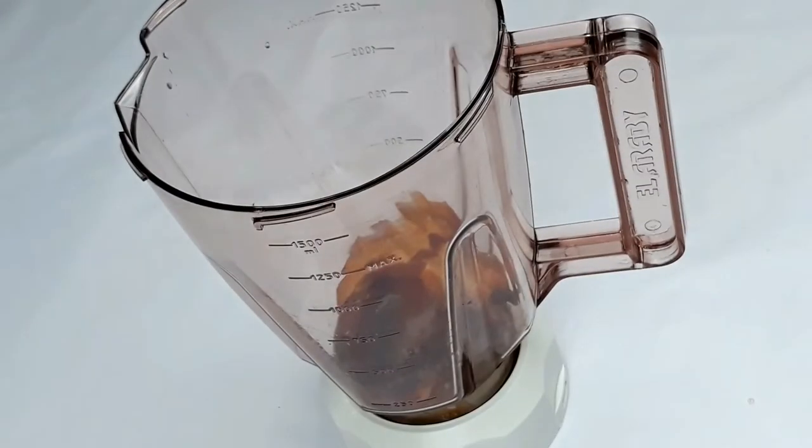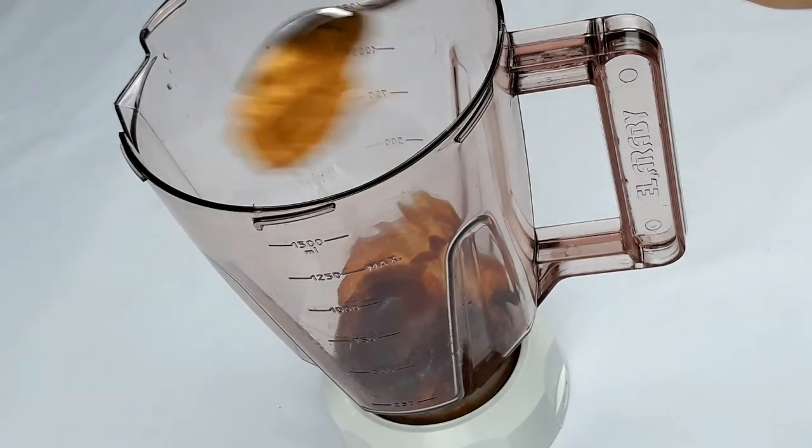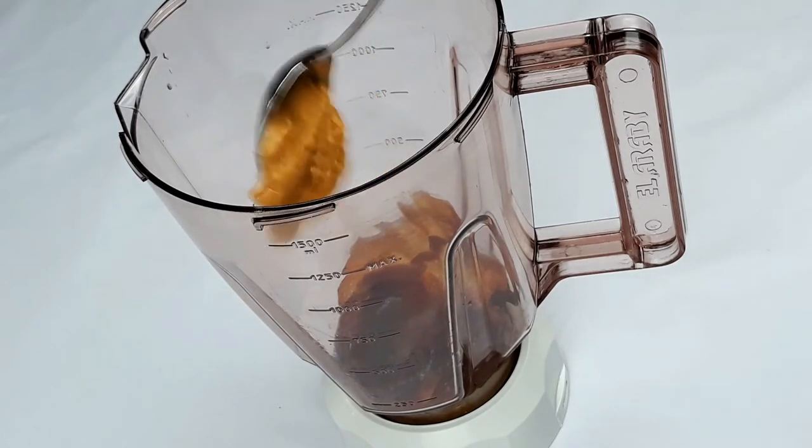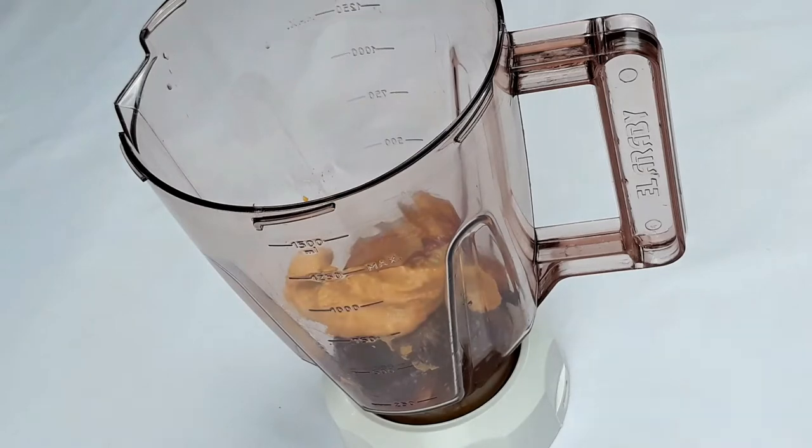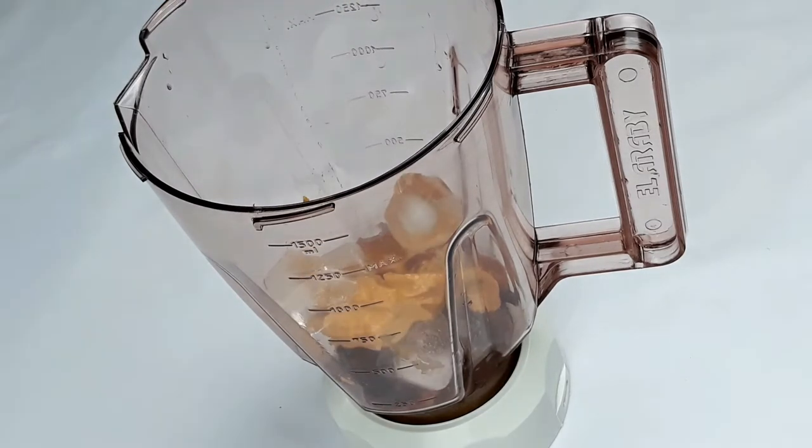As for the third type, we need 3 peaches, a tablespoon of peanut butter, 1 quarter cup of ice, and a tablespoon of honey.